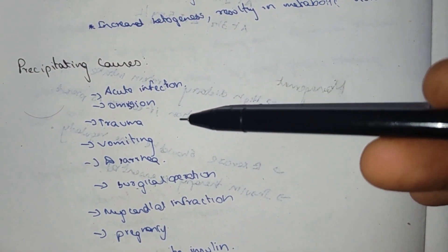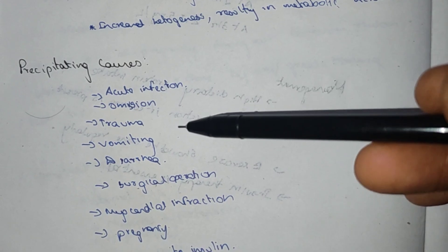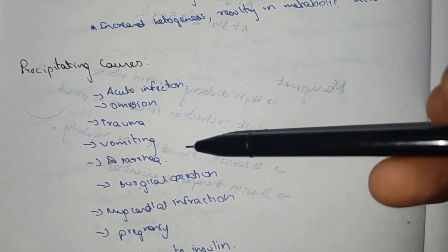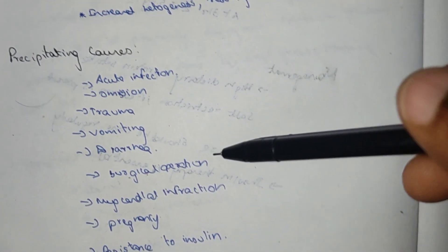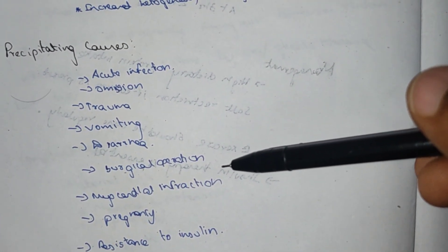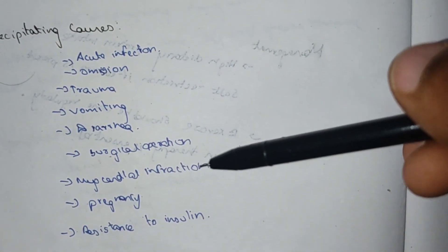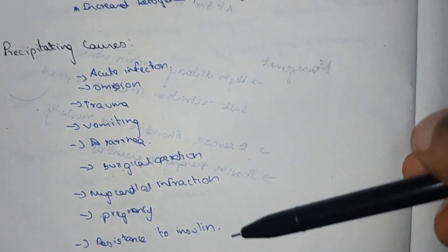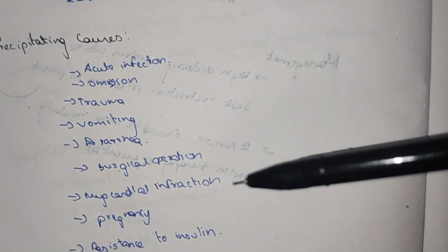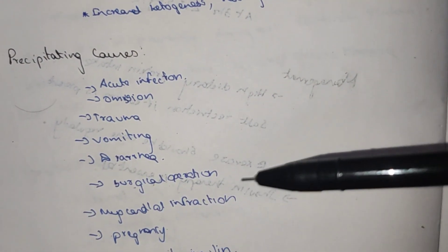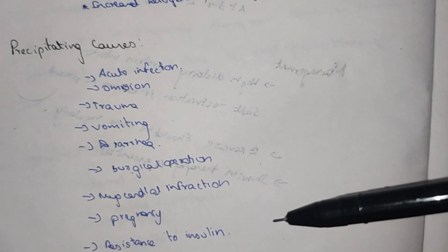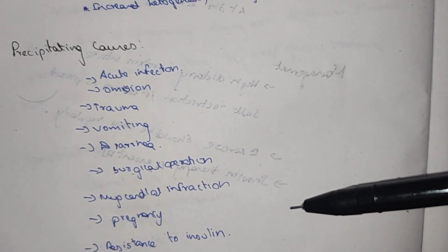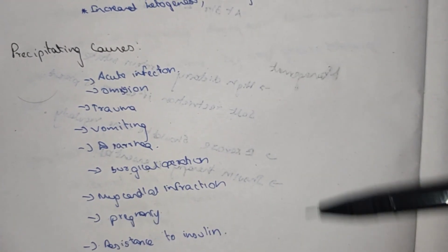Precipitating factors for diabetic ketoacidosis include: acute infection, omission of insulin, trauma, vomiting, diarrhea, surgical operation, myocardial infarction, pregnancy, and resistance to insulin. These are the precipitating causes for diabetic ketoacidosis.